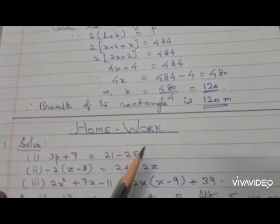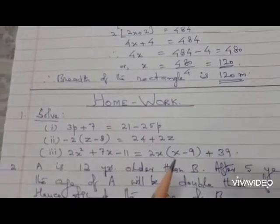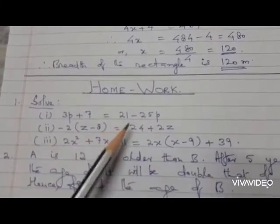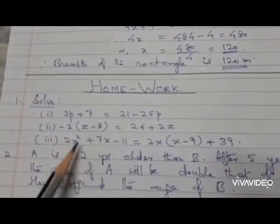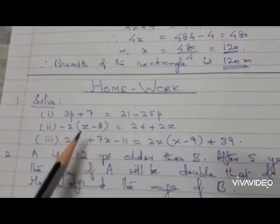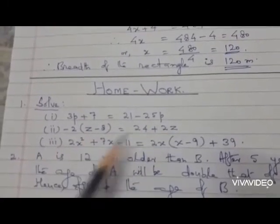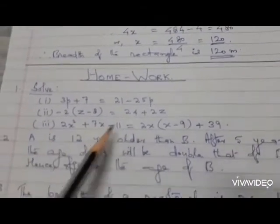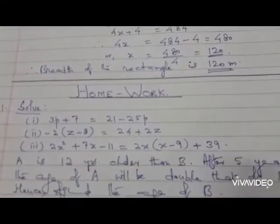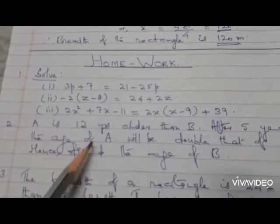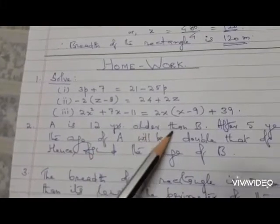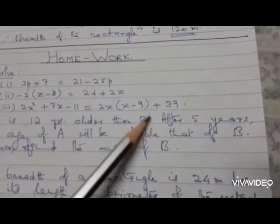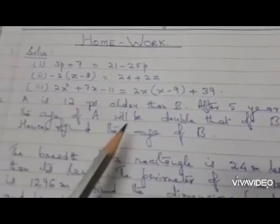We have done different types of questions here. Now I'm giving homework - simple linear equations using different variables like p, z, and x. The second question: A is 12 years older than B. If B's age is x, you have to connect it the same way we did.